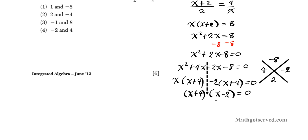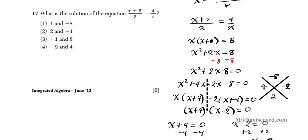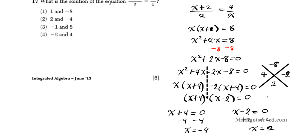Now some people are looking at this answer and saying the answer is negative 2 and positive 4 — option 4. That's incorrect. You have to use the zero product property to finish this off. Set each factor equal to 0 and solve. Because if the product of two numbers is 0, one of the two has to be 0. So subtracting 4 from both sides gives x equals negative 4, and adding 2 to both sides gives x equals 2. So the solution of the equation is 2 and negative 4 — option number 2.